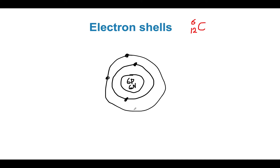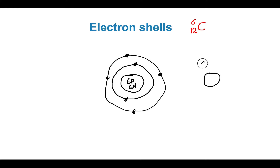When drawing these, most textbooks show electrons moving on a straight line. But actually, this is not how it happens — it's done for simplicity, so we can easily account for the number of electrons and where they are positioned. If we were to draw this properly, this would be the nucleus, and the position of the electron would be represented as a kind of cloud. This would be the first shell.